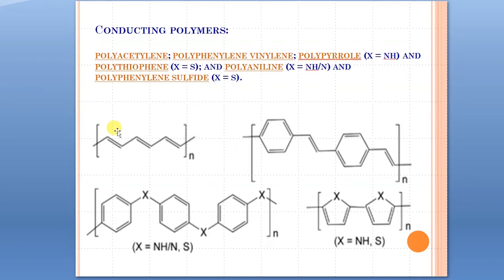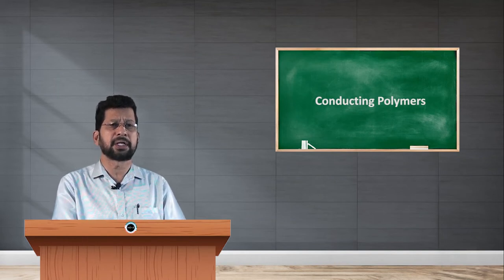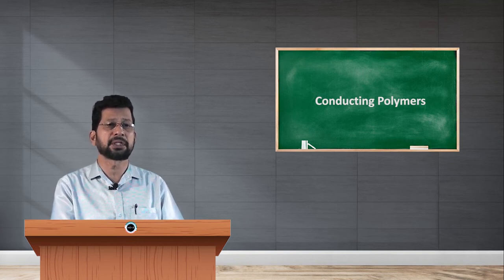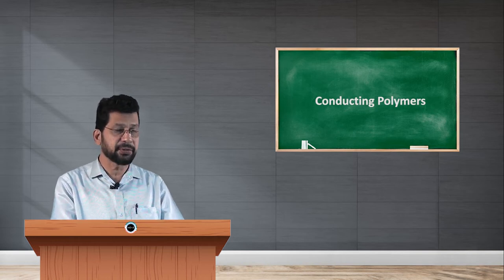You can replace X by groups like NH, nitrogen, or sulfur. If you replace X by NH you get one polymer; if you replace X by N you get another polymer; if you replace X by sulfur you get a third polymer. These are all general representations of conducting polymers. The heterocyclic polymer representation allows X to be replaced by NH or sulfur. Polyacetylene is synthesized starting from acetylene; PPV is synthesized starting from phenylene vinyl compounds; others are synthesized from aniline or compounds containing nitrogen, sulfur, etc.; and heterocyclic conducting polymers are synthesized starting from heterocyclic compounds.